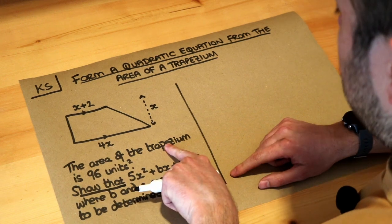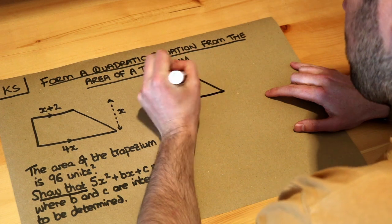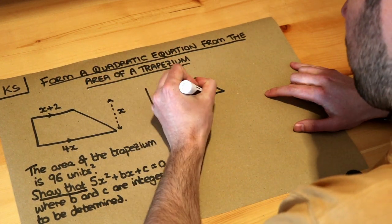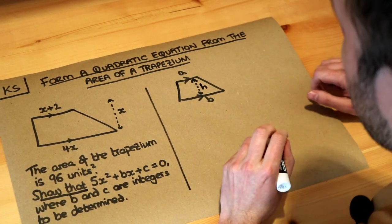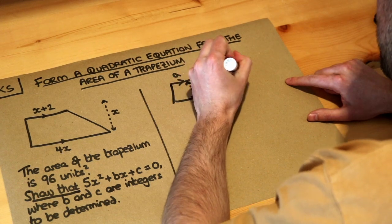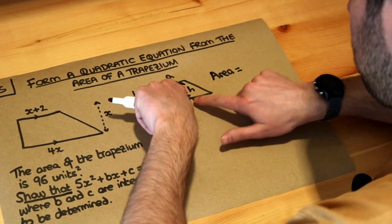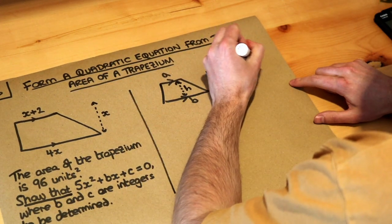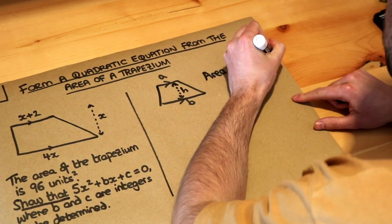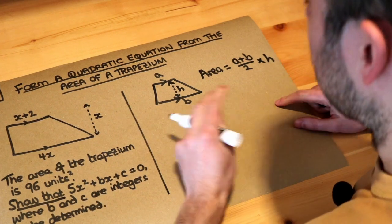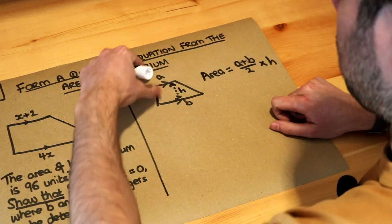Now it tells us the area of the trapezium, so let's think about the area of a trapezium in general. If we have a trapezium with parallel sides of a and b, and a distance between those parallel sides of h, the height, the area of a trapezium is the average of the parallel sides times the height between them. So the average of the parallel sides: we add the two parallel sides and divide them by 2, then times by the height. It's a bit like the area of a rectangle except you average the two parallel sides first.